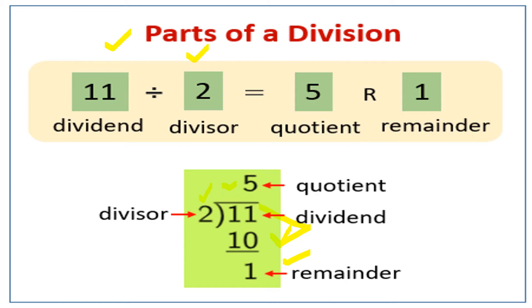2 into 5 is 10. If we subtract 11 minus 10, you will get 1 as the remainder. So 5 is the quotient and 1 is the remainder.